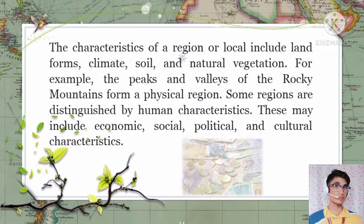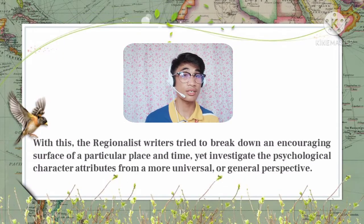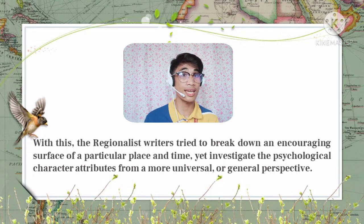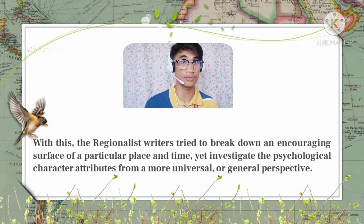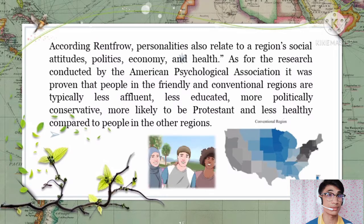Some regions are distinguished by human characteristics, which may include economic, social, political, and cultural characteristics. Regionalist writers tried to break down the surface of a particular time and place, yet investigate the psychological character attributes from a more universal perspective. According to Rentfro, personalities also relate to a region's social attitudes, politics, economy, and health. Research conducted by the American Psychological Association proved that people in the friendly and conventional regions are typically less affluent, less educated, and more politically conservative.